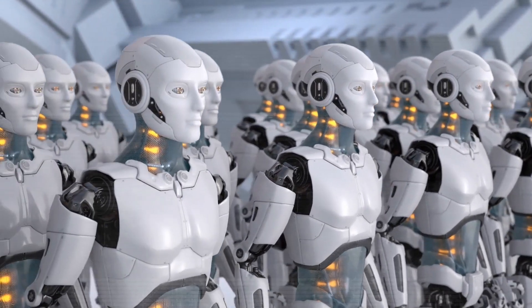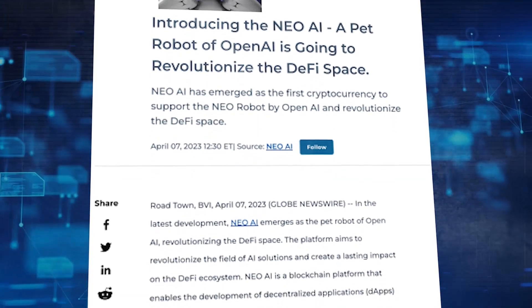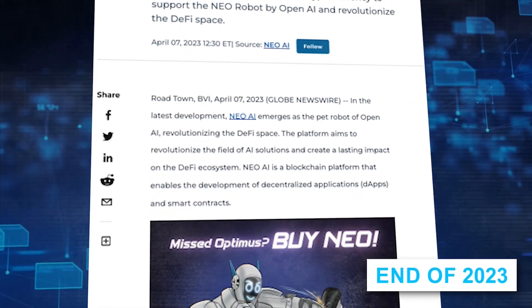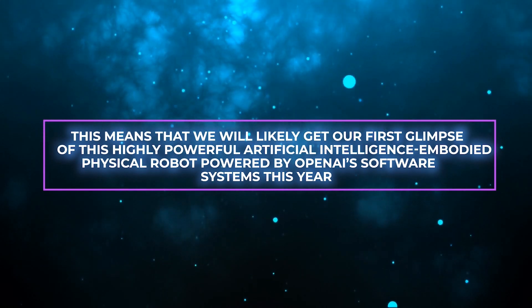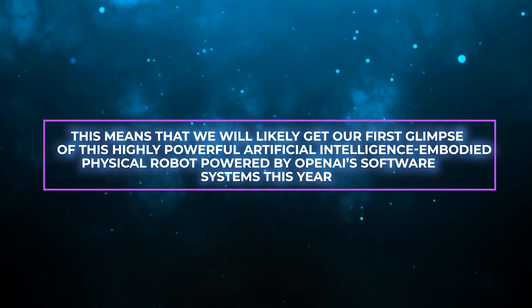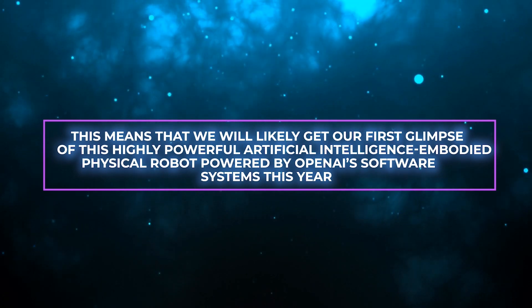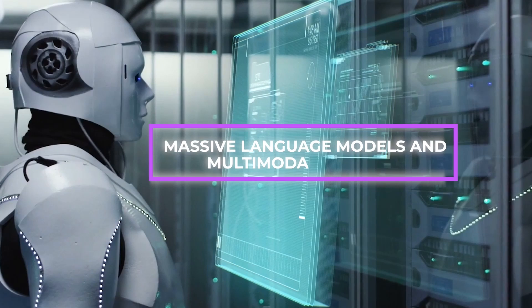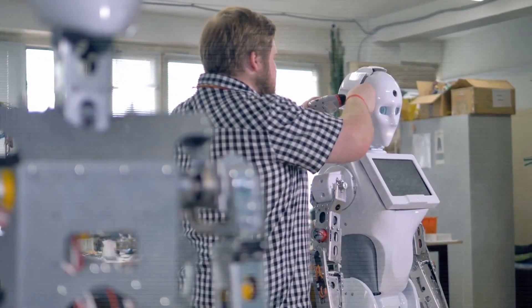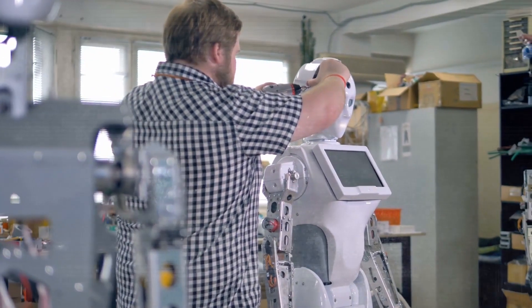NEO will be available for pre-order by the end of 2023, according to OpenAI. This means that we will likely get our first glimpse of this highly powerful artificial intelligence embodied physical robot powered by OpenAI's software systems this year. Artificial intelligence has advanced to the point where massive language models and multimodal models are being moved into real robots for the first time.